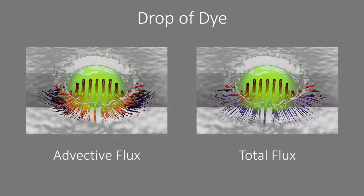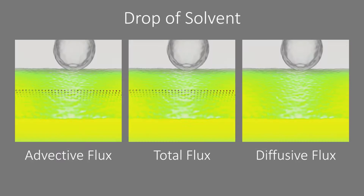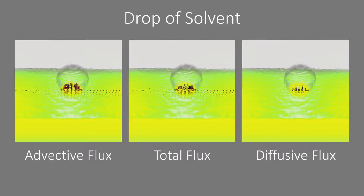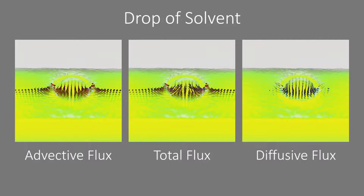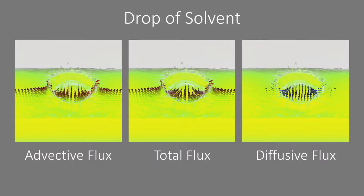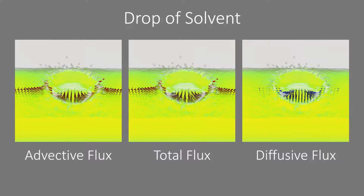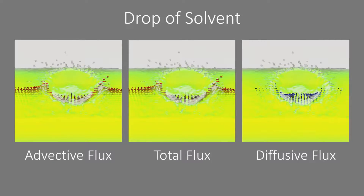Additionally, streamlines can be colored according to the dominating flux. Advective flux is displayed in red, diffusive flux in blue. If we drip solvent into a tank of dye, the dye diffuses into the drop while advection follows the drop's movement.